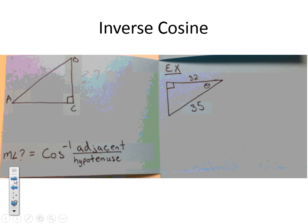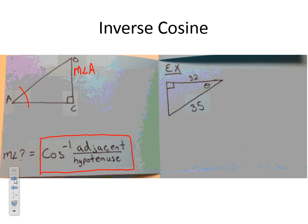Moving on to inverse cosine. When working with inverse cosine to find the measure of an angle, we use the inverse cosine of adjacent over hypotenuse. So the measure of angle A is going to be equal to inverse cosine of the adjacent — that's the side it's touching but not the hypotenuse — which is AC, over the hypotenuse AB.